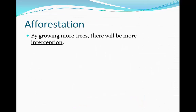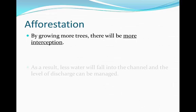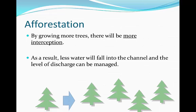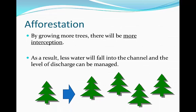Afforestation: by growing more trees there will be more interception. As a result, less water will actually fall into the channel, the level of discharge will be managed and reduced, hence making flooding less likely to happen.